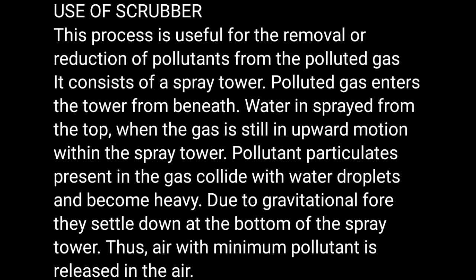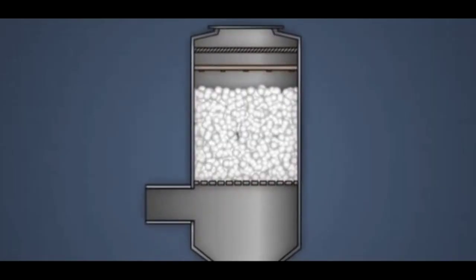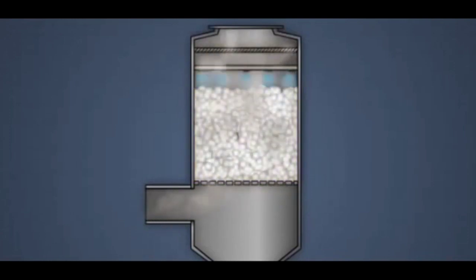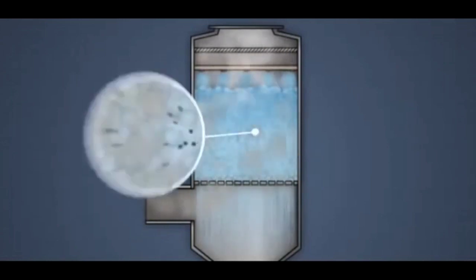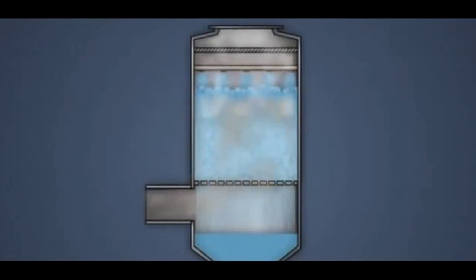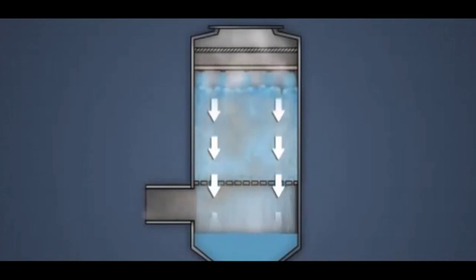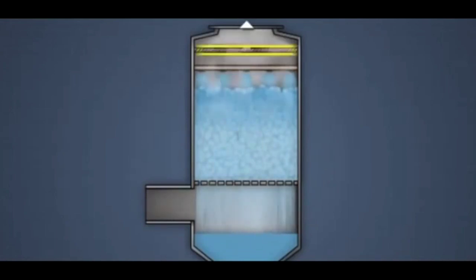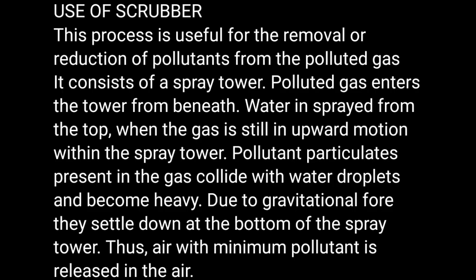Another method is the use of scrubbers. This process is useful for the removal or reduction of pollutants from polluted gas. It consists of a spray tower fitted to industries. Polluted gas or smoke is passed through a packed material, and a nozzle at the top sprays liquid onto it. The liquid mixes with the pollutants in the gas, making them heavy, and under gravity they drain to the base of the chamber, leaving only clean air to pass through the tower.